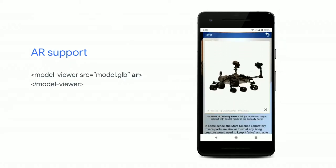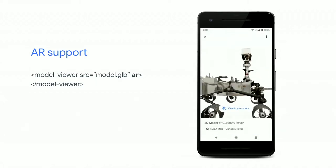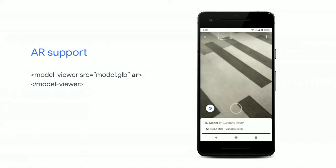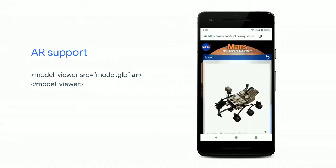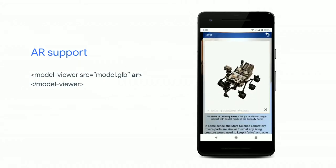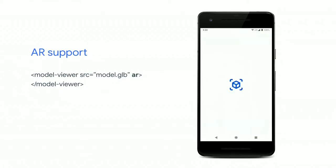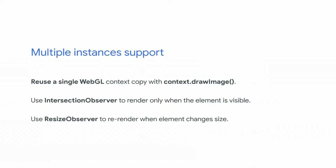Model Viewer also supports AR — augmented reality. You can see it being used on the NASA website. Just by adding the AR attribute, it will show an icon and launch the AR viewer for both Android and iOS. For iOS, you have to include the USDC file. While building the component, we realized that depending on the device, you can only have up to eight WebGL contexts at once — if you create a new one, the first one disappears.